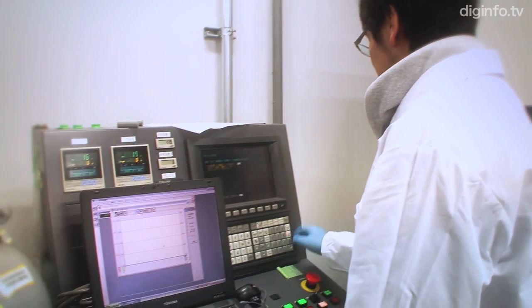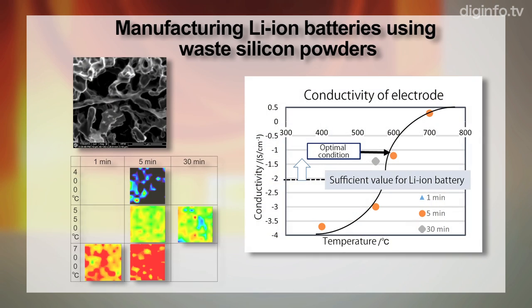In addition, the lab is now working to develop a new type of lithium-ion battery using waste silicon powders produced in large amounts during semiconductor manufacturing.